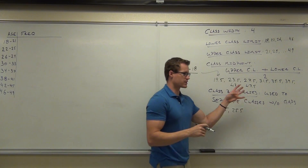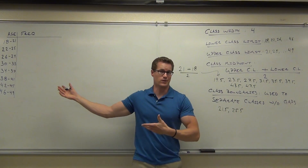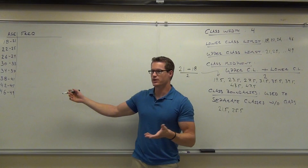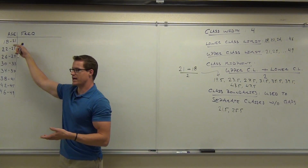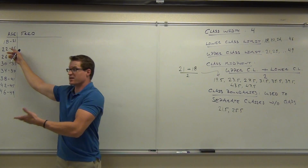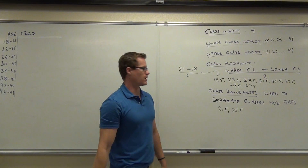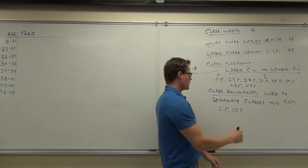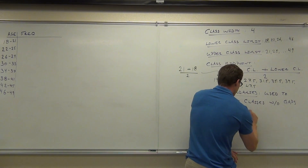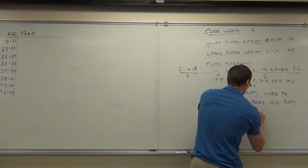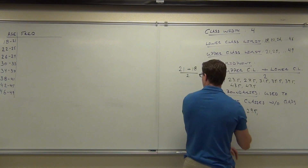You can still use that class width thing, or you can do the math if you really want to. You can average these two, or just add four, or just think about it — 25 to 26, what's right in the middle? 25.5. Next ones, we can find all of them if we'd like. We're going to have 29.5. Is that right? Yes.